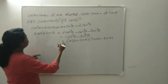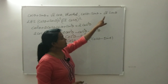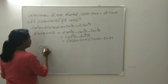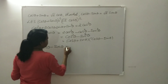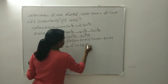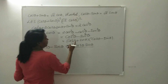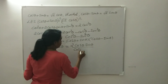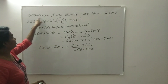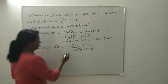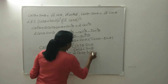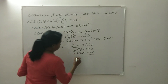Now, what we have to prove is cos θ - sin θ = √2 sin θ. So we can write cos θ - sin θ = 2 cos θ sin θ divided by (cos θ + sin θ).